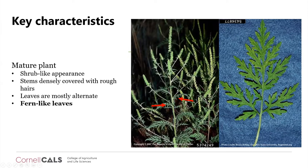The leaves continue to be deeply dissected and fern-like as the plant matures. A picture of the common ragweed leaf shows it almost reminds you of a fern.